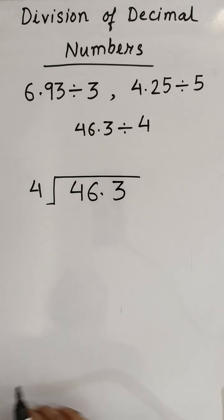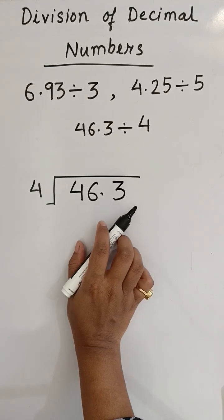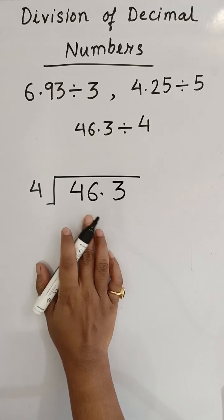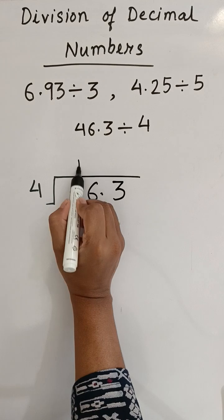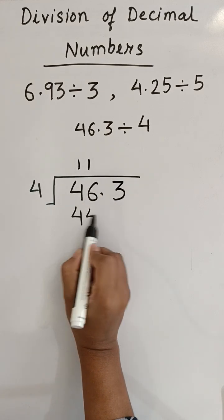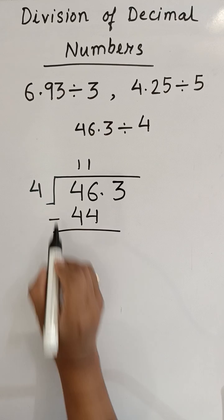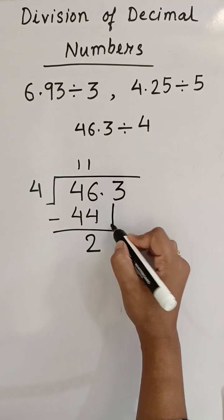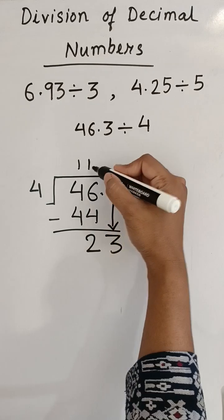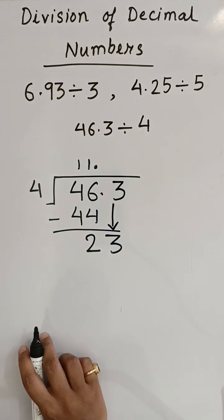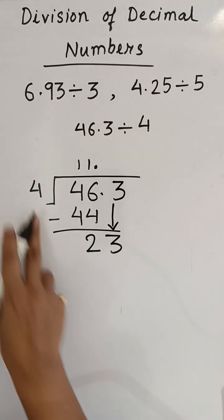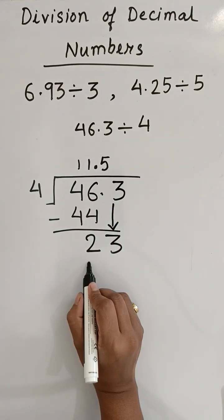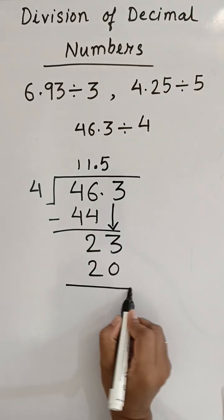Now let us move to the third question: 46.3 divided by 4. How many times does 4 go into 46? 4 into 11 is 44. Do the subtraction: 46 minus 44 is 2. Now the 10th number comes down, which is 3, and at that point we have to put a decimal point here in the quotient.